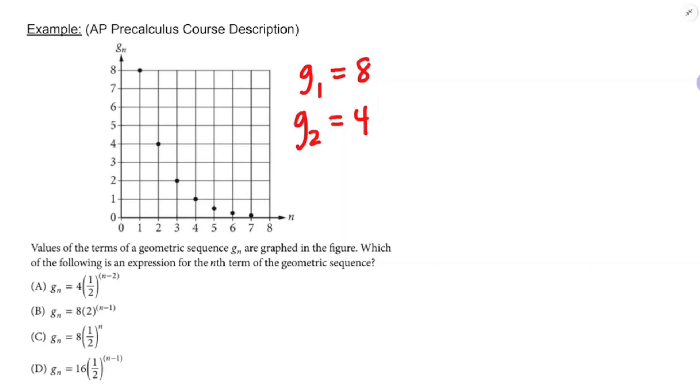Alright, so 4 times 1 half to the n minus 2. Well, let's just plug in. It does seem to work. It works for 1 and 2, because 1 half to the negative 1 is 2. That's just an interesting way of putting it. Let's see what's wrong with the other ones. 8 times 2 to the n minus 1. If we plug in n equals 1, we do get 8. But if we plug in n equals 2, we get 16. So that one's out. 8 times 1 half to the n. That doesn't even fit n equals 1. When n equals 1, I need to get 8, and that would give me 4.